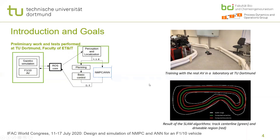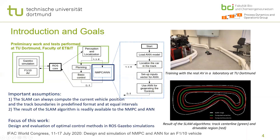One assumption we make is that the SLAM algorithm can always deliver the current position of the car and accurate information about the track, and we can use that to start developing our NMPC and ANN algorithms.